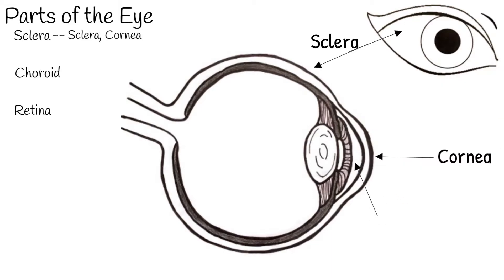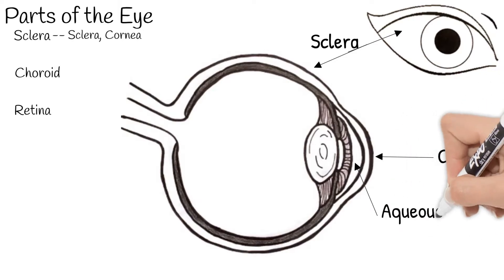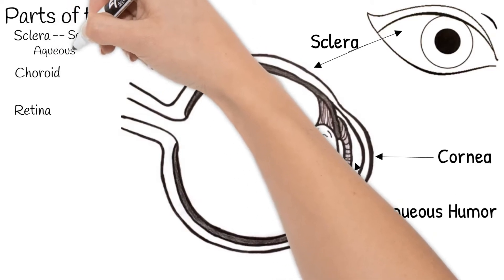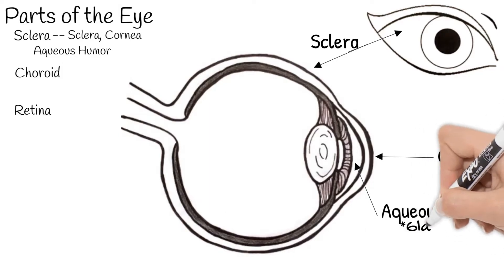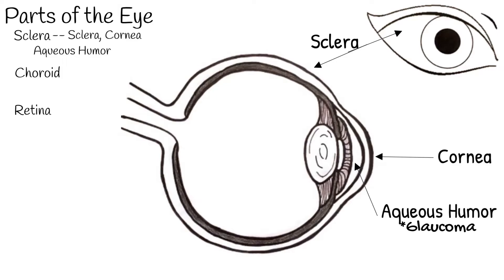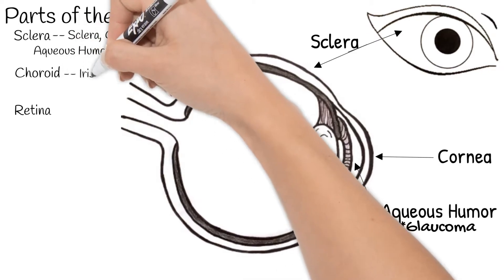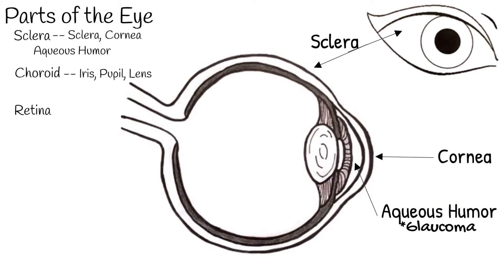Behind your cornea is a transparent fluid called aqueous humor. The aqueous humor supplies nutrients to the cornea as well as protects the lens underneath. Glaucoma is a common issue in older people and happens when there is a buildup of fluid in the aqueous humor, which causes pressure. If this pressure continues too long, it can result in blindness. When you go to an optometrist and they do the air puff test in your eye, they are testing for glaucoma.